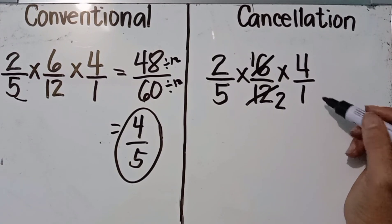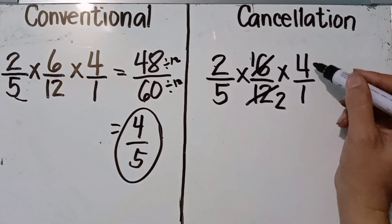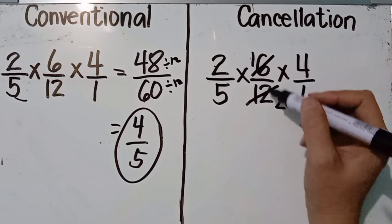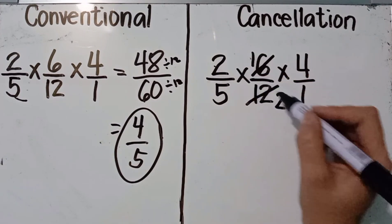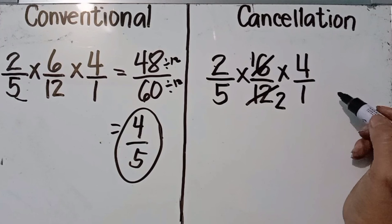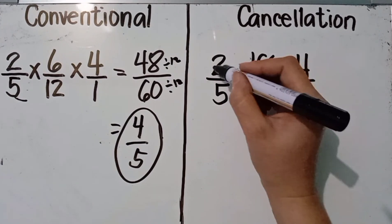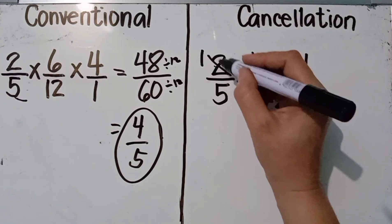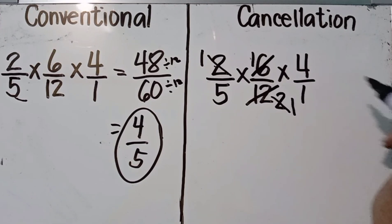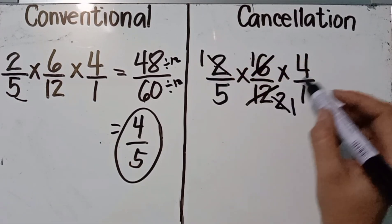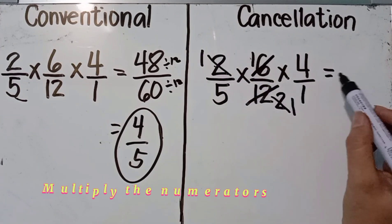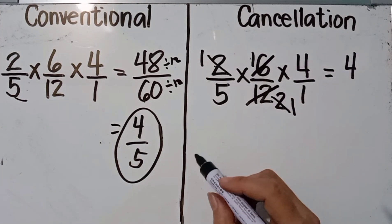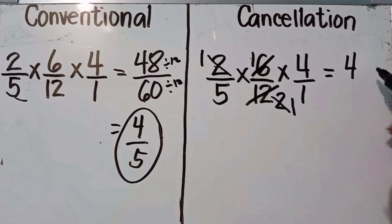After cancellation, there are no more common factors. Multiply the numerators: one times one times four equals four. Multiply the denominators: five times one times one equals five. Finally, simplify if possible — four over five is already in lowest terms, so there is no need to simplify. Our final answer is four over five.